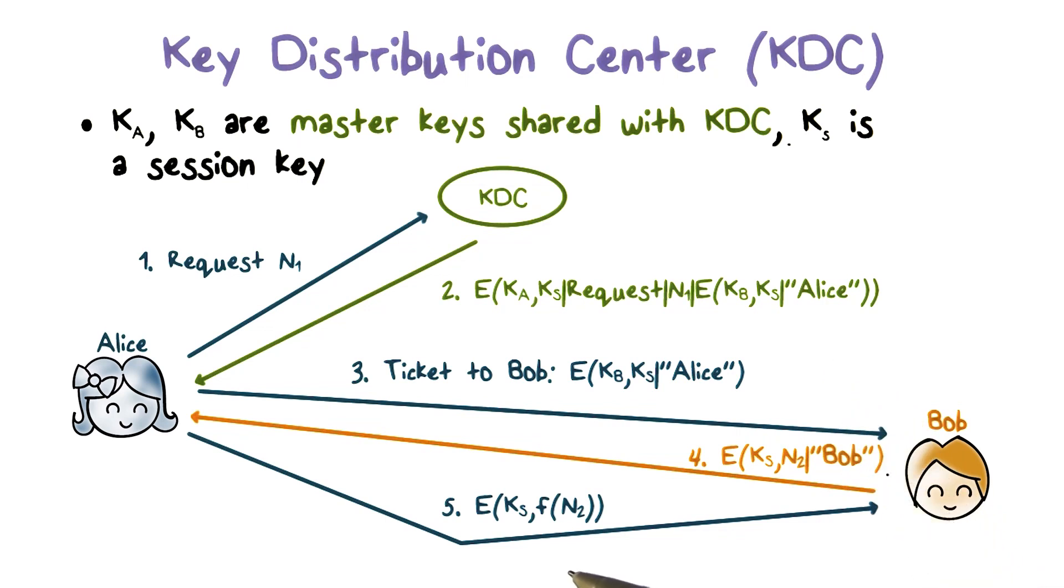Alice then performs an agreed upon transformation on N2, say, add 100 to N2, and encrypts the result using KS and sends it back to Bob. This proves to Bob that he is communicating with Alice because only she has the session key KS.